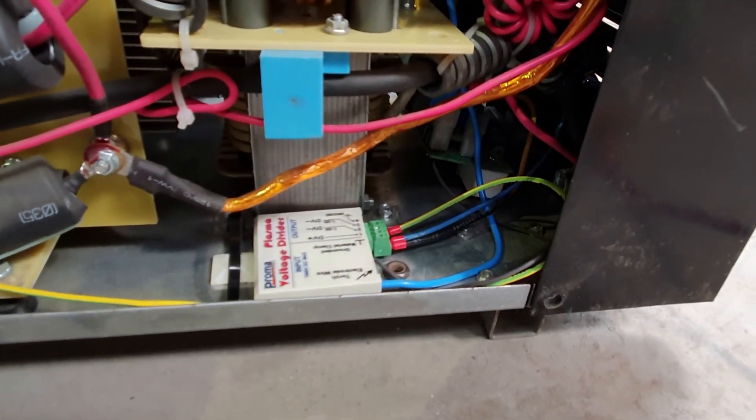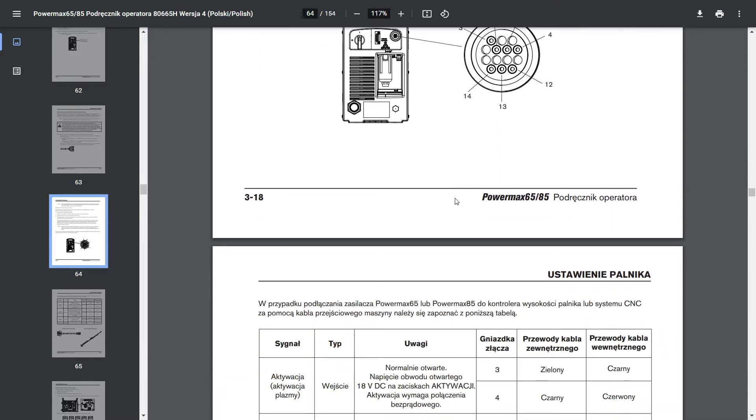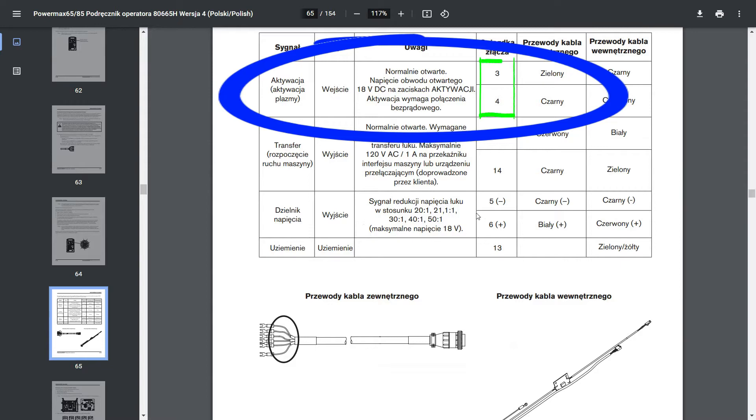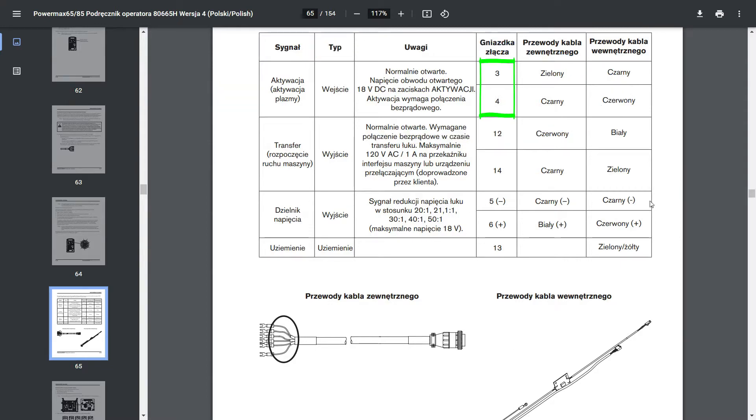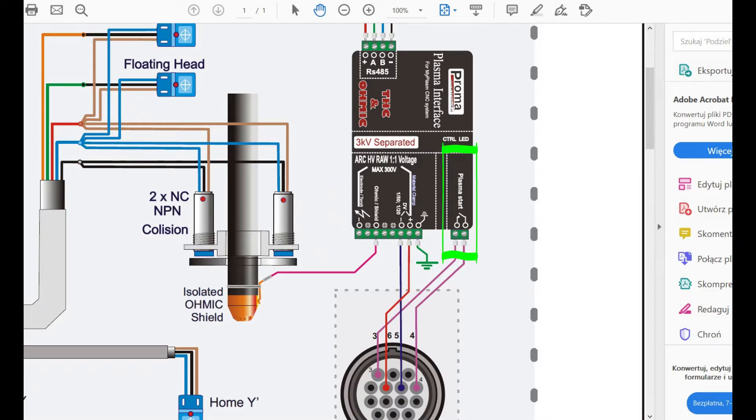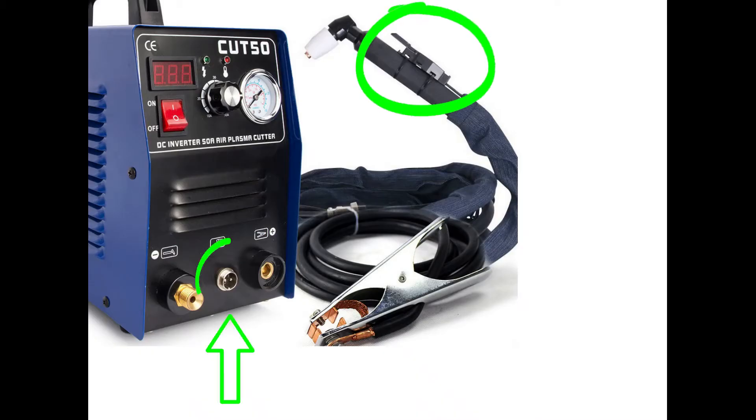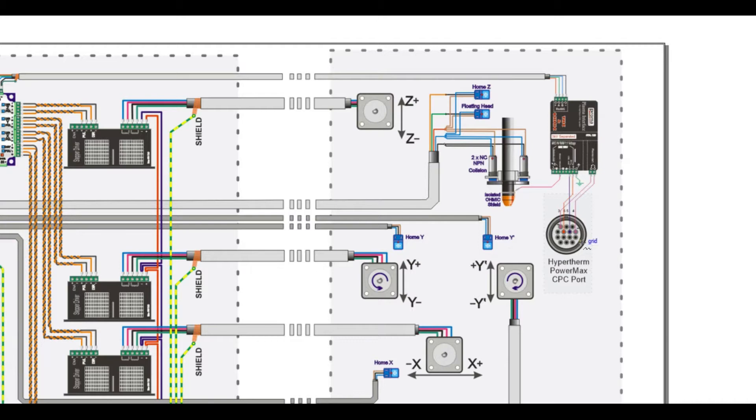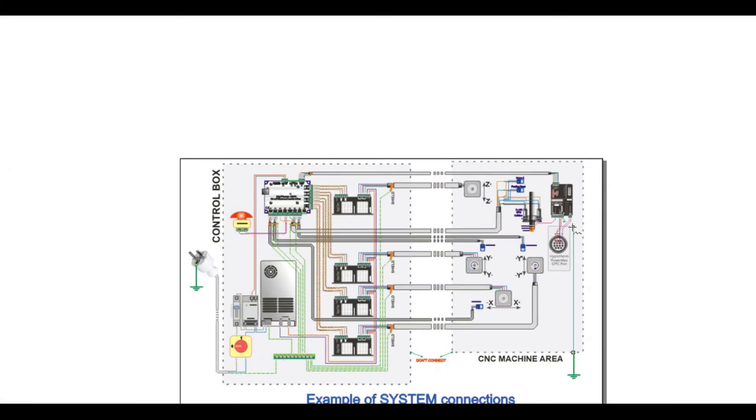The next step is to connect the start arc pins. For sources with CNC connector, check in the documentation which pins are responsible for the arc start. For cutters with a manual handle, this is the push-first button. The connector interface pin marked with earthing symbol should be connected to any place connected with protective earth.